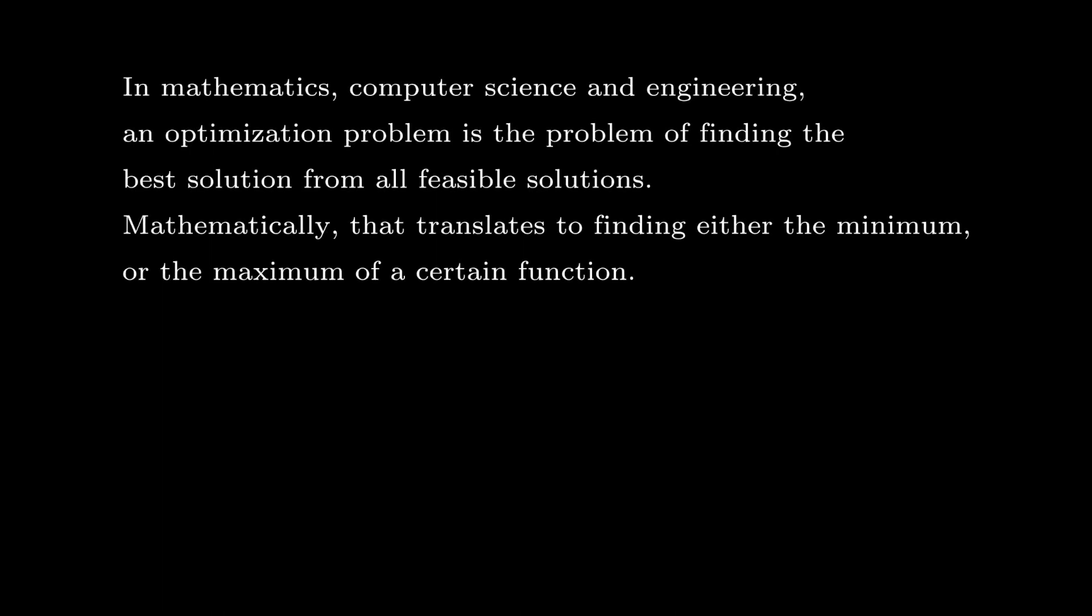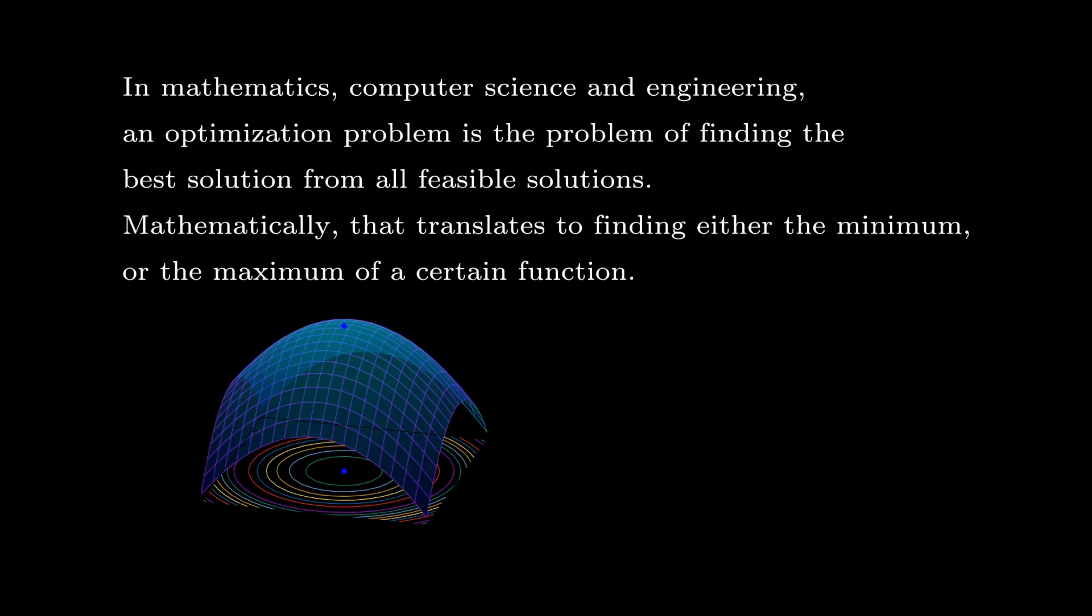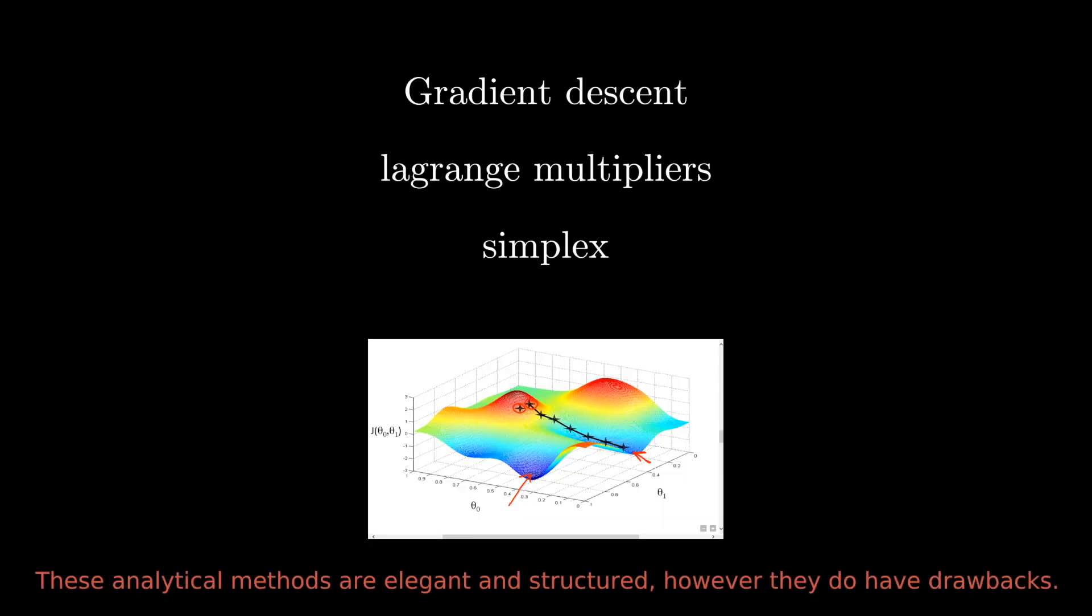The aim of optimization is to pick the best solution out of a huge number of possible solutions. Traditional approaches include methods like gradient descent, Lagrange multipliers, and simplex. Genetic algorithms are an alternate way to solve optimization problems.